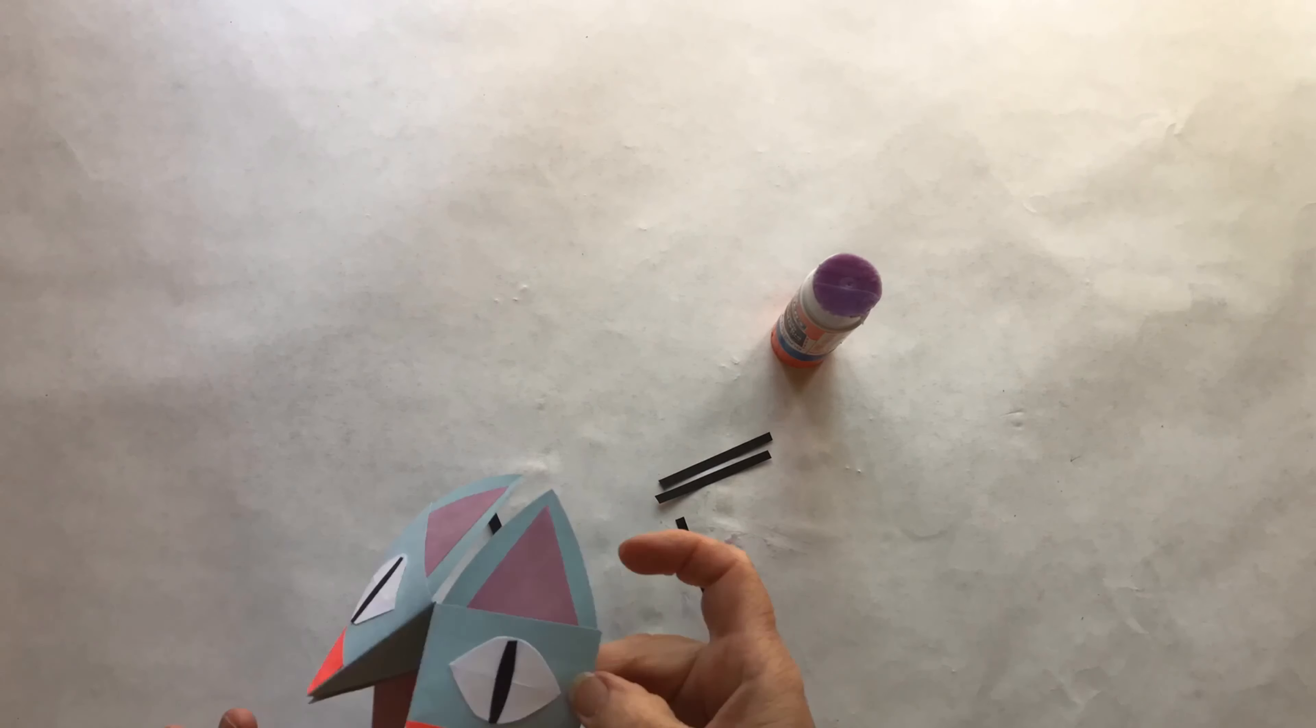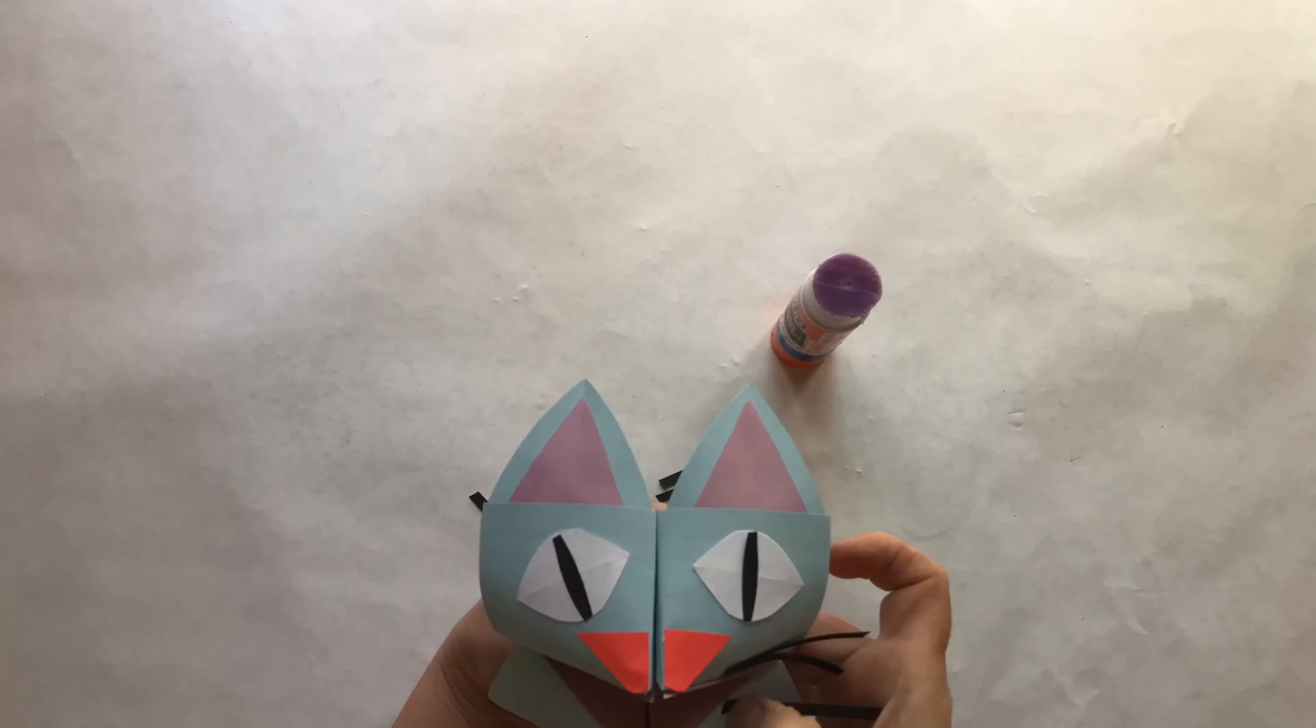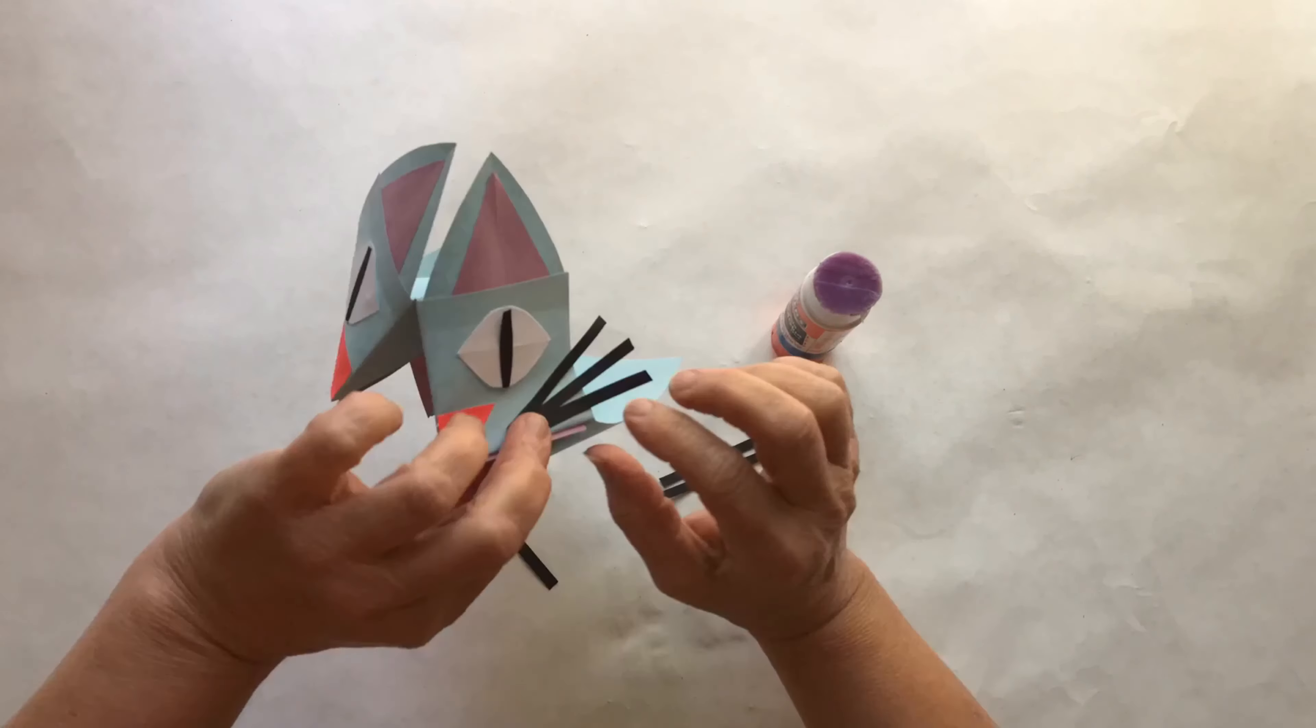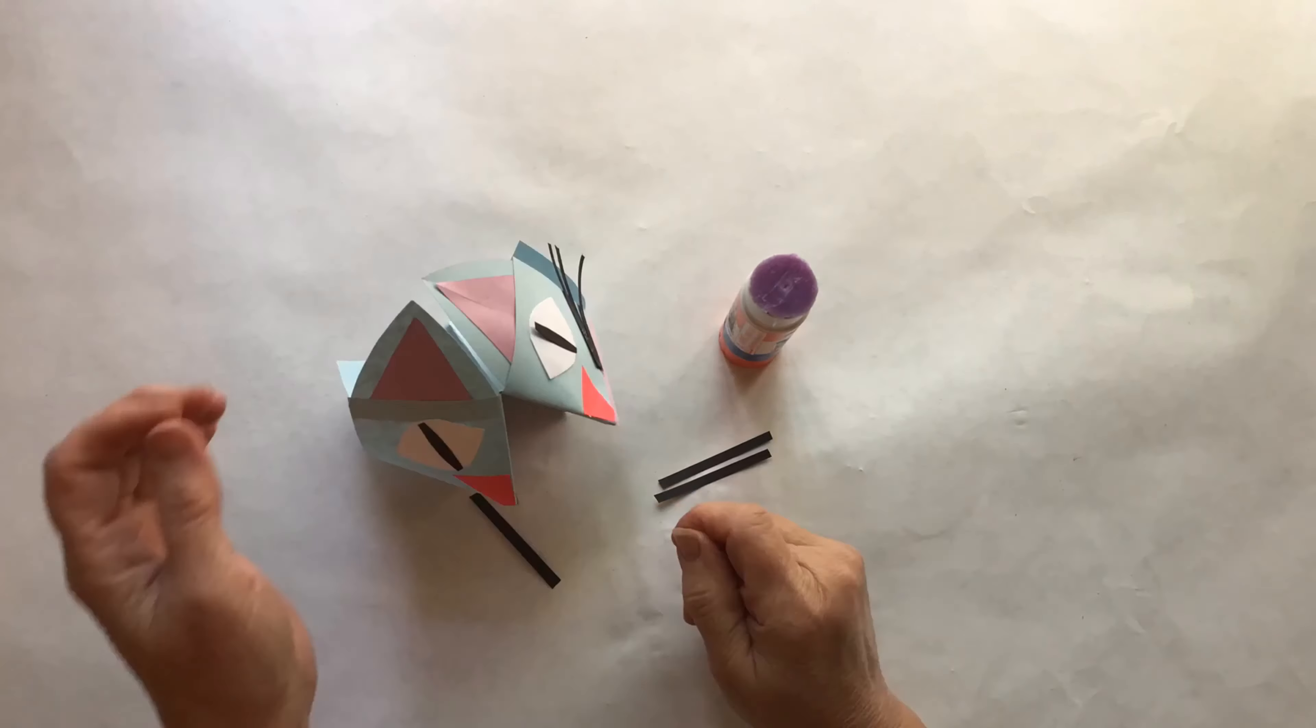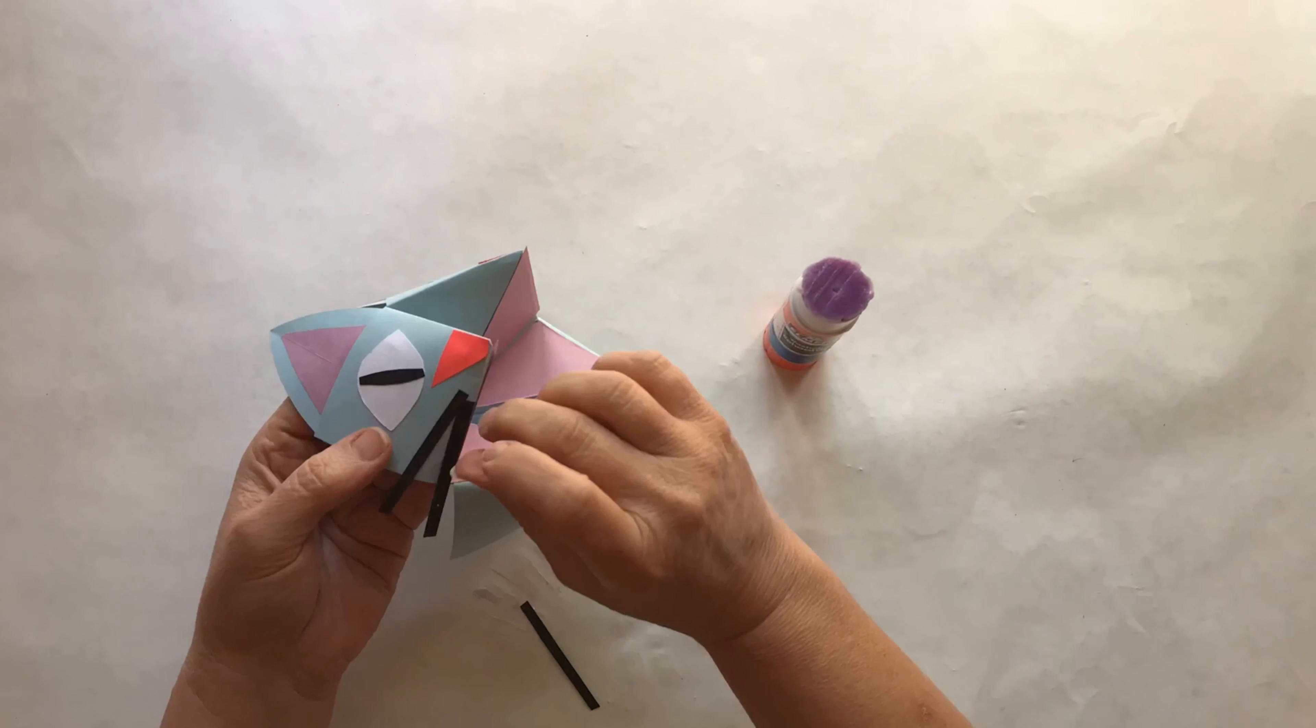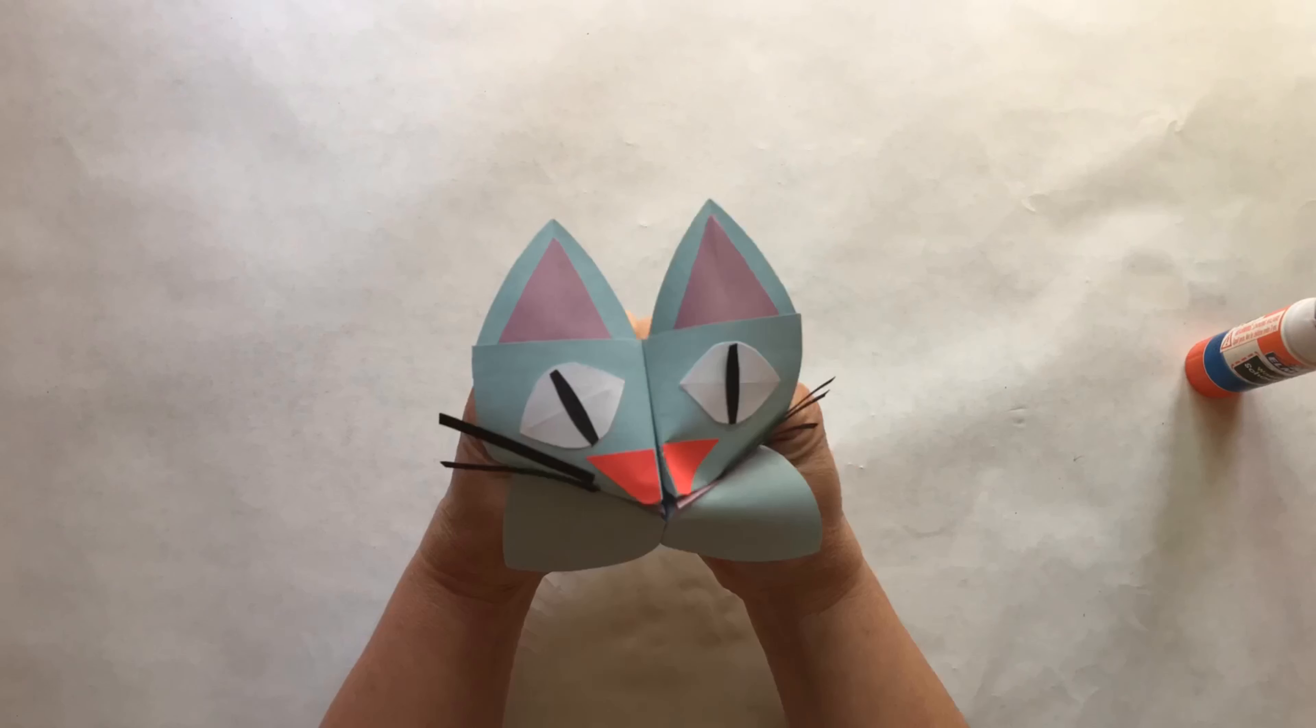I saved the whiskers until the end. I had a little bit of trouble putting the whiskers on but I finally figured it out. And there you have a fortune teller cat. Of course you can make this into any animal that you want.